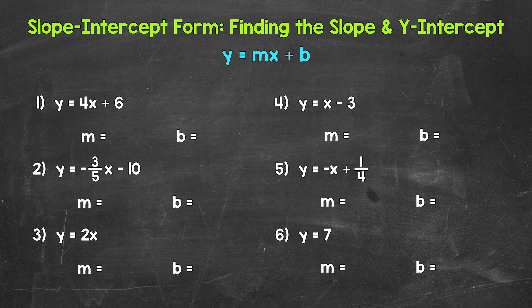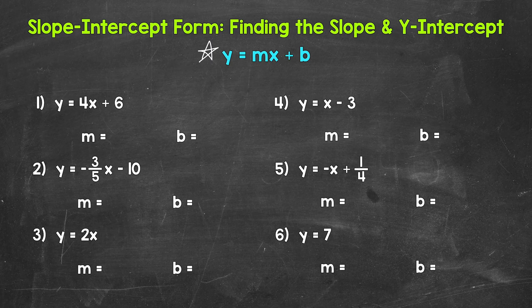Slope-intercept form is a way to write the equation of a line, so we can write and graph equations of lines using this form. Slope-intercept form is right here: y equals mx plus b. Although this may look confusing at first, once we understand what the letters represent, this will become much more clear. We're going to start by focusing on two of the letters, m and b. m is going to be the slope of the line.